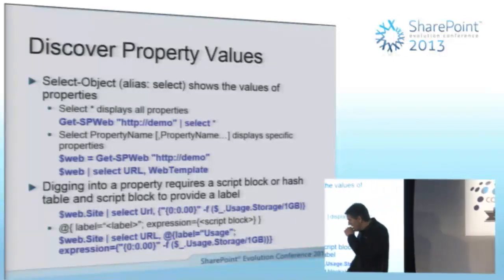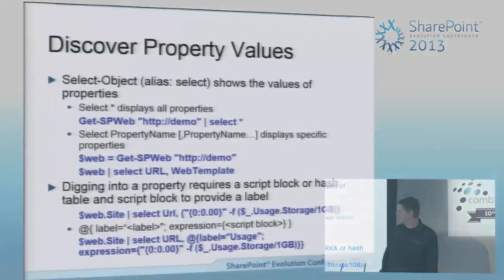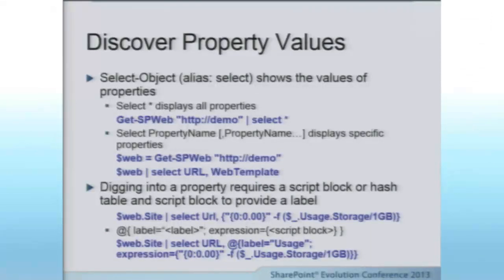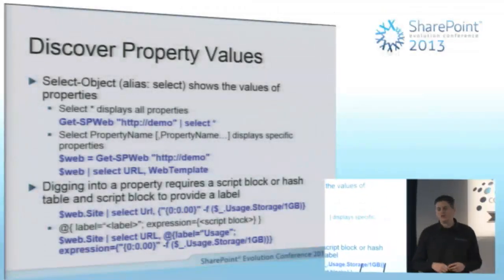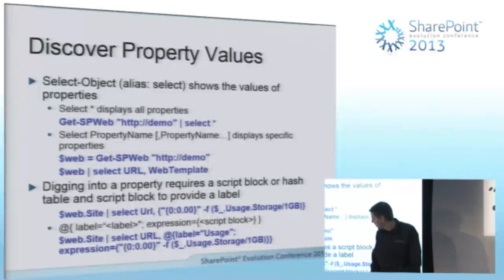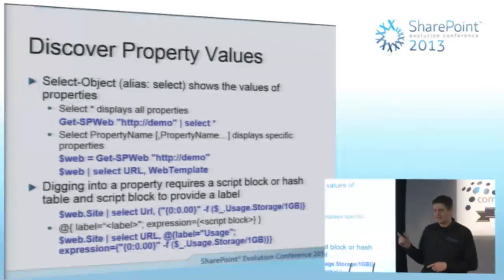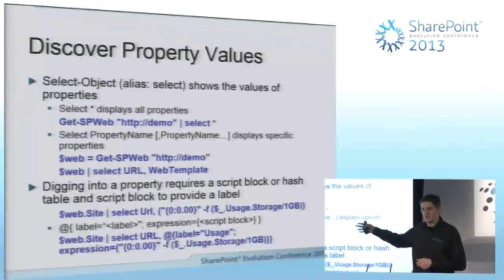If you want to provide a label with a computed property, use a hash table: at-sign followed by curly braces with key-value pairs. Select-Object wants specific keys: 'E' or 'Expression' for the expression, and 'L' or 'Label' for the label. The expression is your script block and the label is your display name. You can use format strings, just like string.Format in C# — so -f with zero as a placeholder and specifying decimal places, like two decimal points for a storage value.